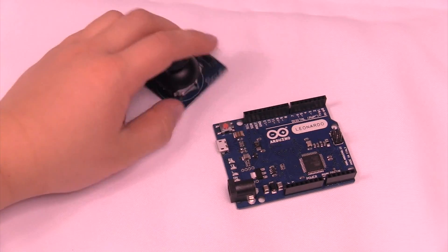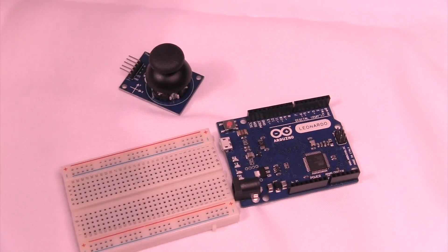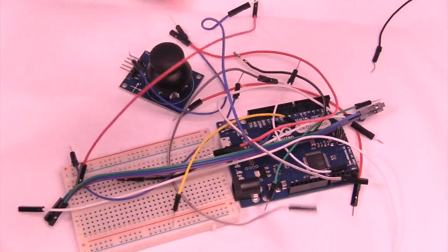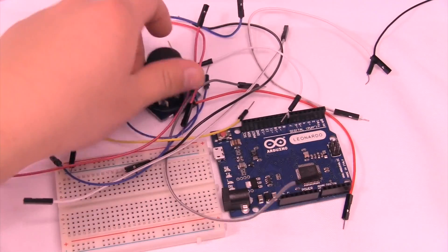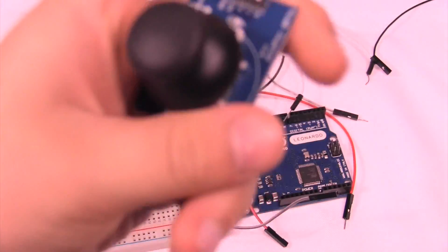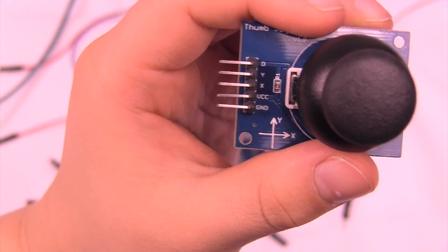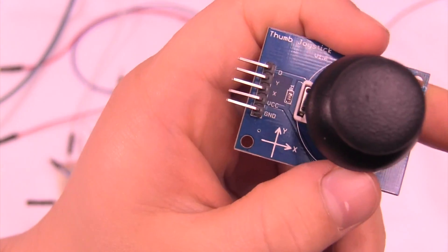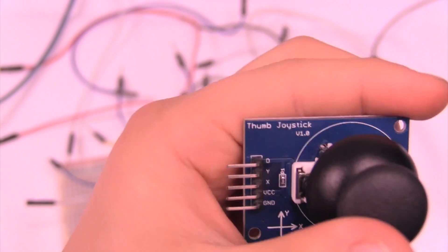We're gonna start by looking at the joystick. If you look at the joystick labeling, it says D which is a button you can press, X and Y which are the axes. A joystick is basically two potentiometers you can move in any direction, and again VCC and ground.